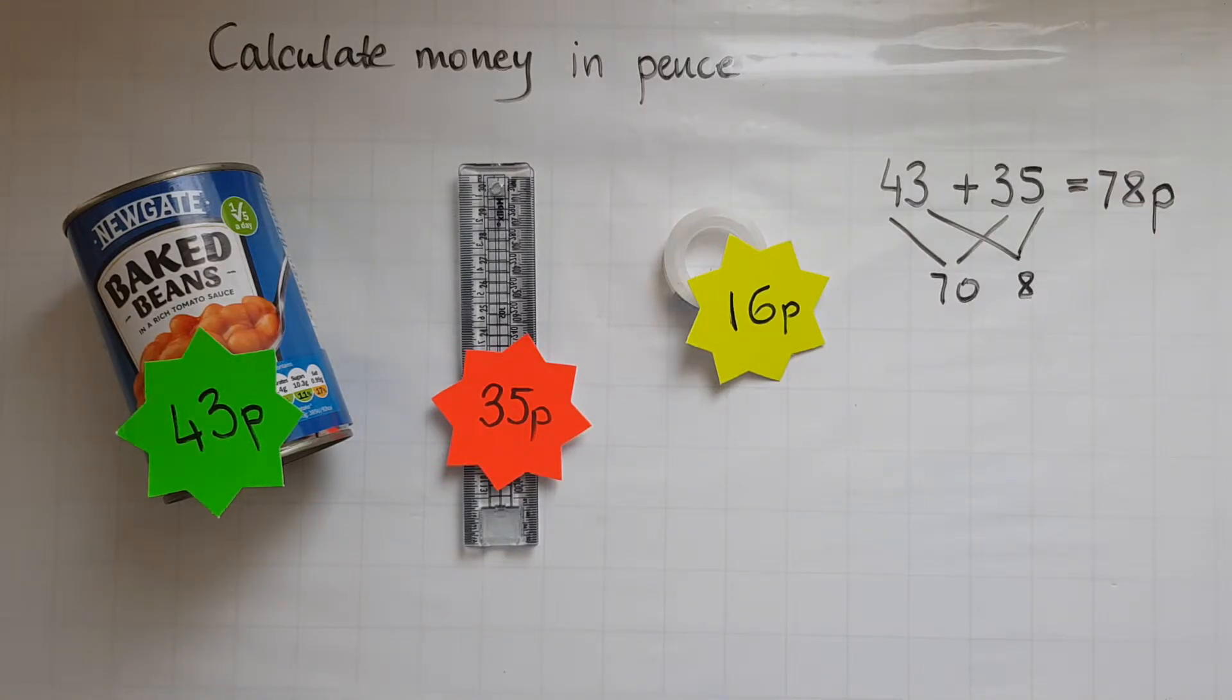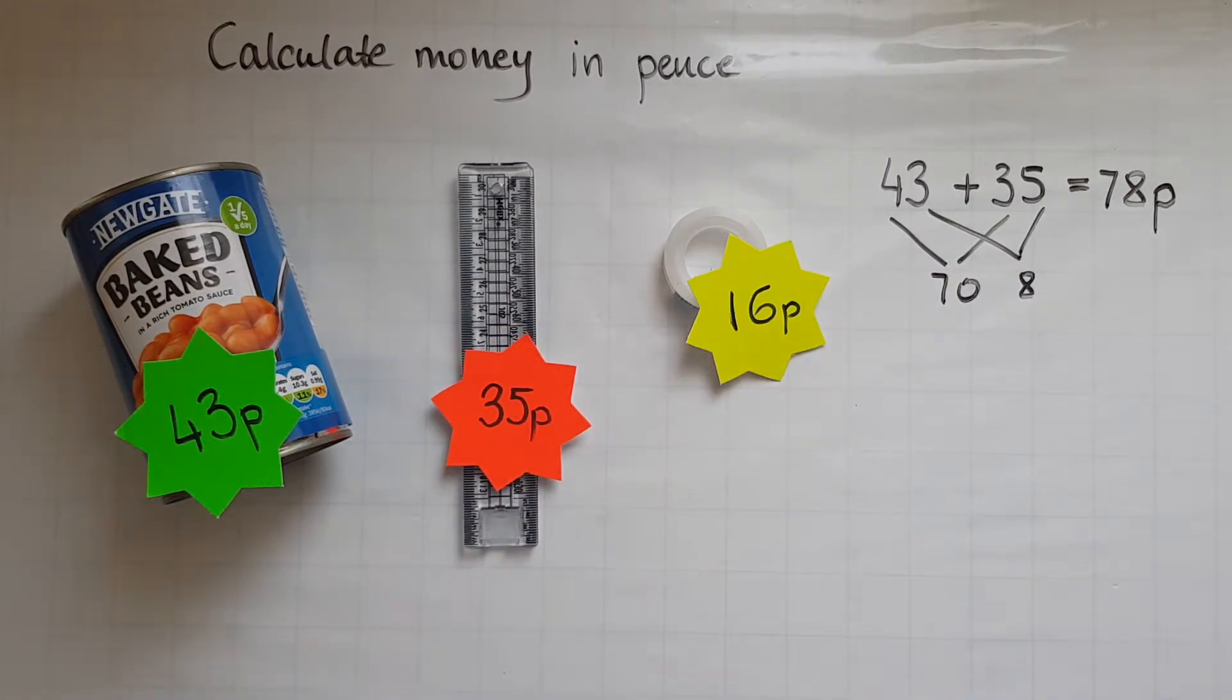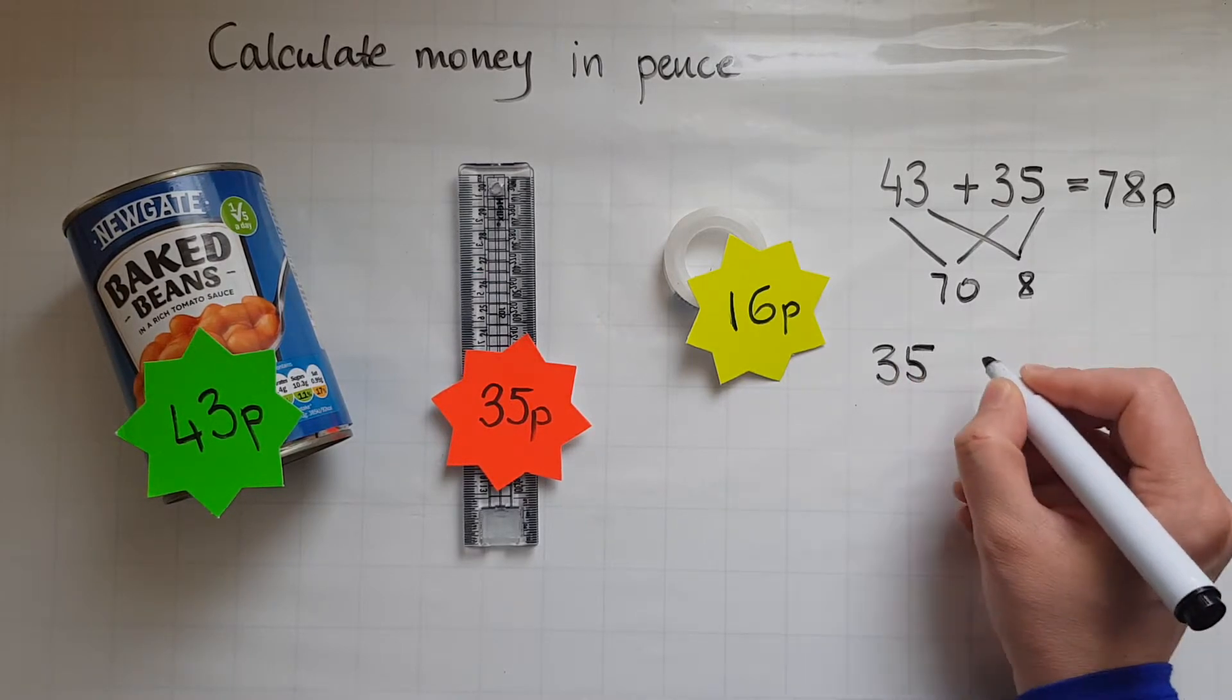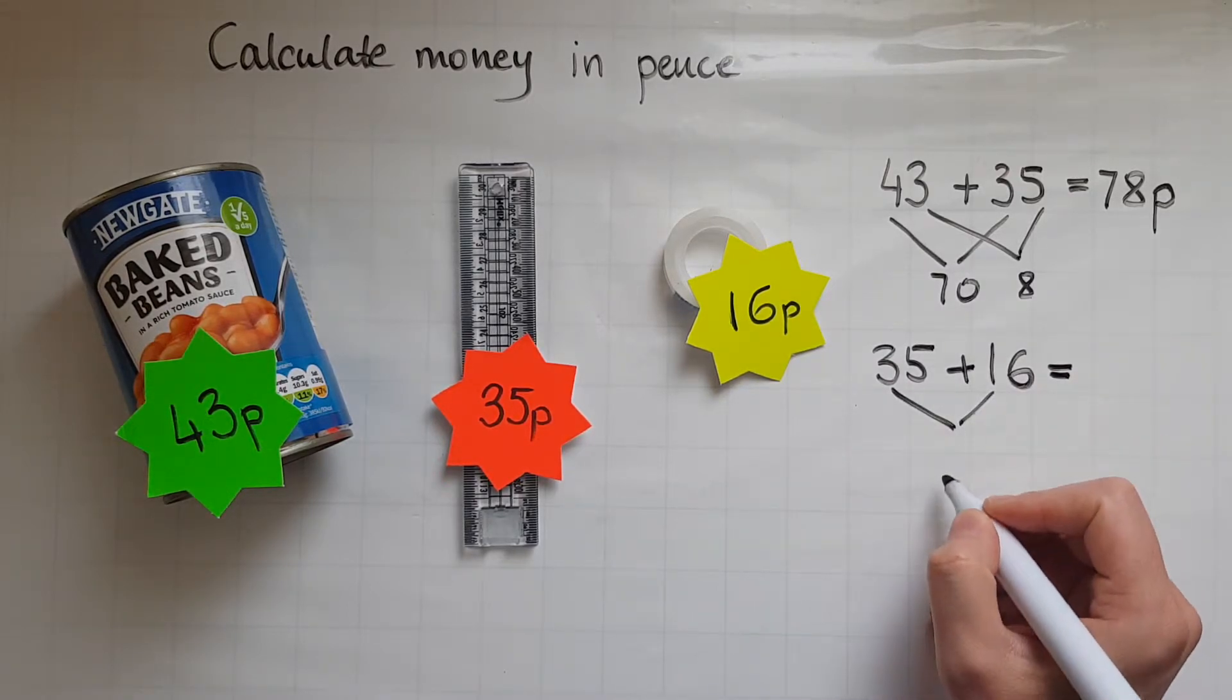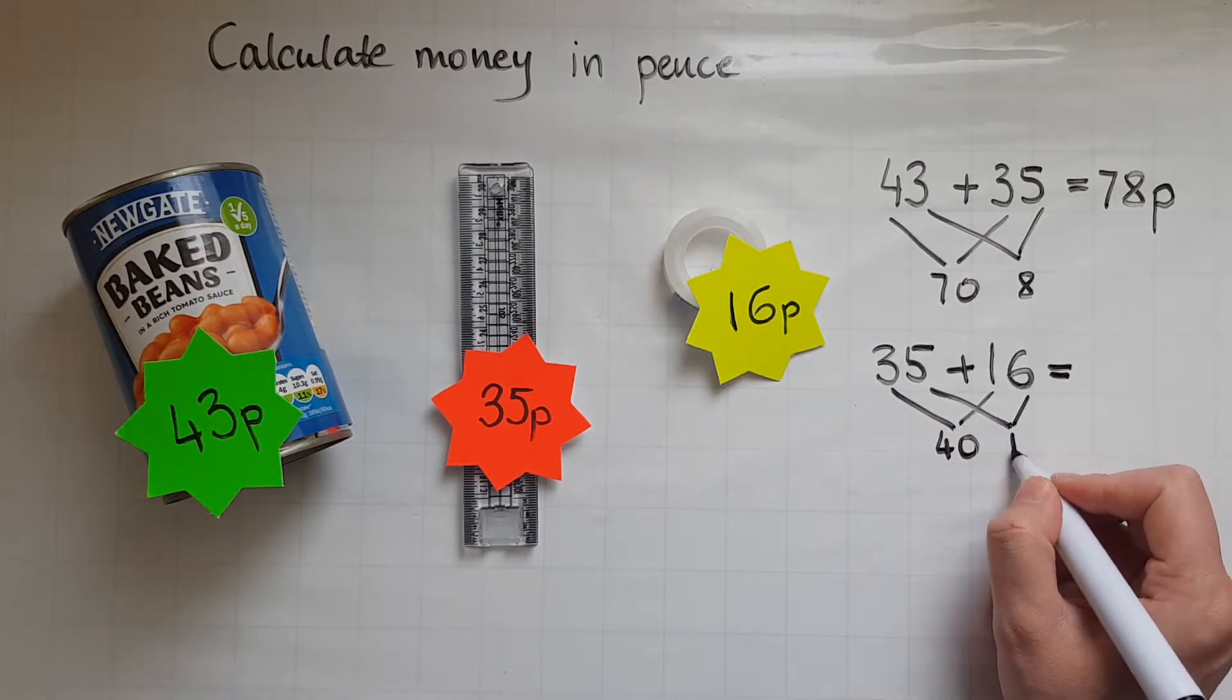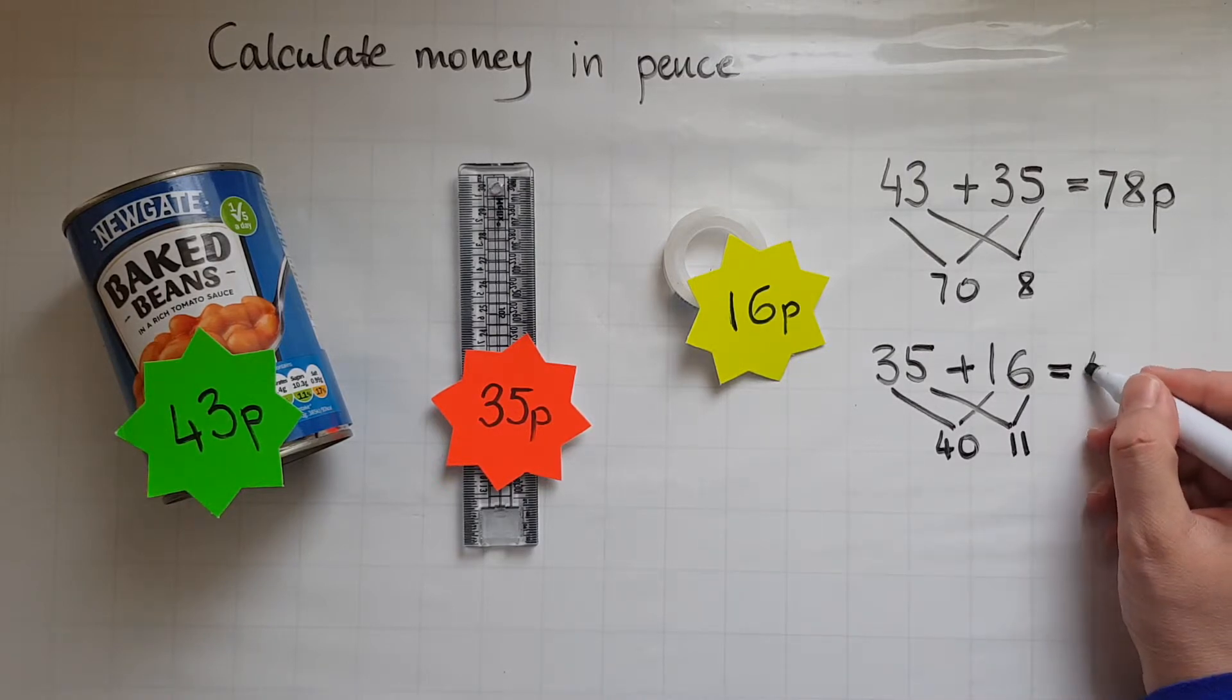Now I will work out how much a ruler and sticky tape cost. So we've got 35 and 16 equals. 30 and 10 gives me 40. 5 and 6 gives me 11. So 40 and 11 gives me 51. And what is that 51? Is pence.